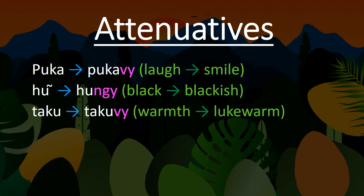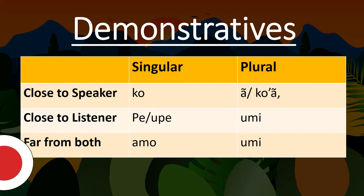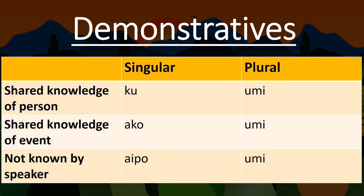Now onto demonstratives. Guarani uses a system similar to Japanese for its demonstratives. It distinguishes between entities close to the speaker, close to the listener, or far from both, with singular and plural variations for each demonstrative. However, it also has a set of demonstratives which you use to talk about shared knowledge, or something other than the topic being discussed.